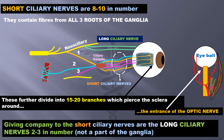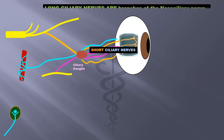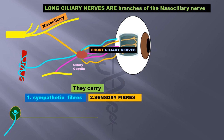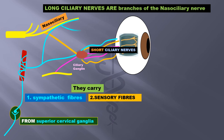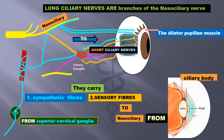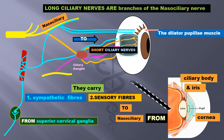Accompanying the short ciliary nerves are the long ciliary nerves, which are just 2 to 3 in number. They are not a part of the ganglia, but they carry sympathetic fibers from the superior cervical ganglia to the dilator pupillae muscles of the eye, as well as sensory fibers to the nasociliary nerve from the ciliary body, cornea, and iris. The long ciliary nerves are branches of the nasociliary nerve.